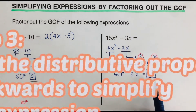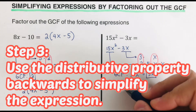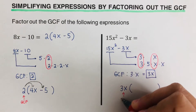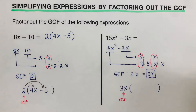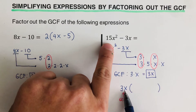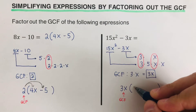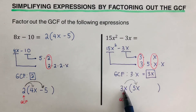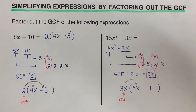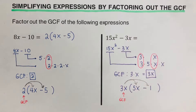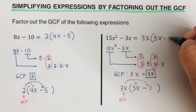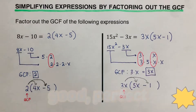Now we move on to the third step: use the distributive property backwards. We write 3x outside the parentheses and figure out what goes inside. Dividing: 15x squared divided by 3x is 5x, and negative 3x divided by 3x is negative 1. That makes sense because 3x times negative 1 is negative 3x. So the factored form is 3x times (5x minus 1).